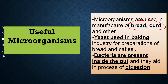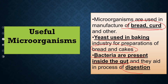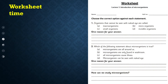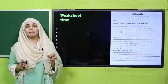Microorganisms are used in making bread and curd. When you look at bread and curd, microorganisms are present in them and help in making them. They are used in baking — pizzas, cakes, and breads. Yeast is present in them; bacteria is present inside the gut and helps with digestion. So these are different uses of microorganisms, showing that they can also be very helpful.